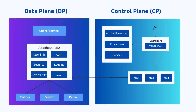APISIX consists of a data plane to dynamically control the request traffic, and a control plane to store and synchronize gateway data configuration, orchestrate the plugins, as well as perform real-time analysis and processing of request traffic. Apache APISIX uses etcd for configuration storage, which supports multi-instance deployment, and there is no single point of failure.